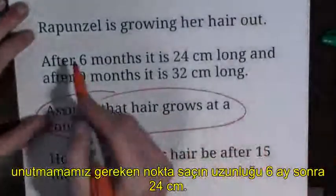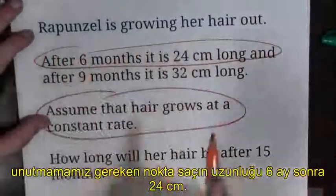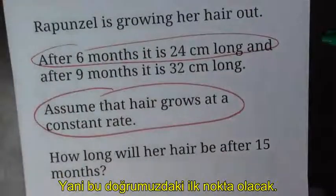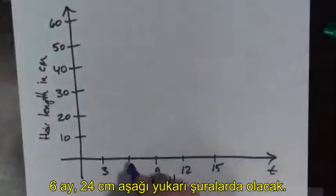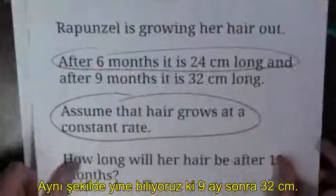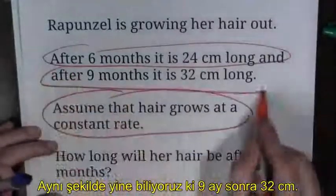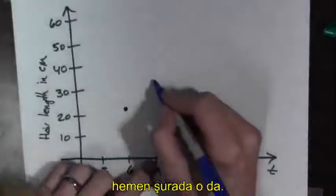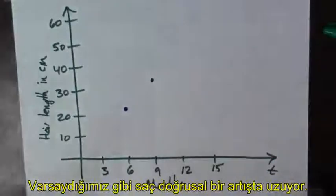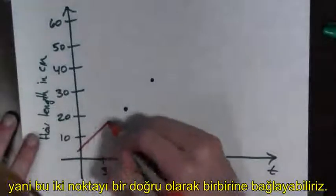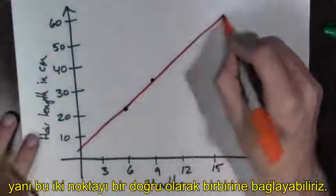The next key point to keep in mind is that after six months, the hair is 24 centimeters long. This means this is a point on our line. So here we go. Six months, 24, that's right around there. And we also know that after nine months, the hair is 32 centimeters long. So, nine months, 32 is right up here. Since we know that the hair grows at a constant rate, we should draw a line connecting these two dots.